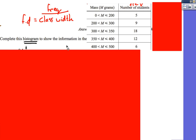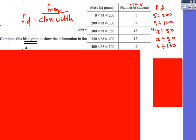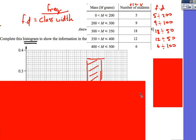Next: complete the histogram to show the information in the table — the same table from the previous question. Whenever you see a histogram, you're thinking frequency density. Frequency density is frequency divided by class width. So here, the frequency is 5 and the class width is 200, so do 5 divided by 200. Then 9 divided by 100, 18 divided by 50, and so on.